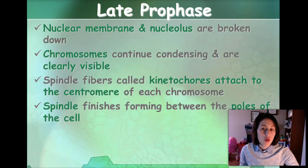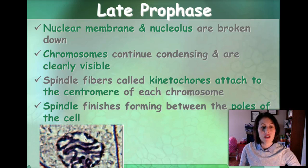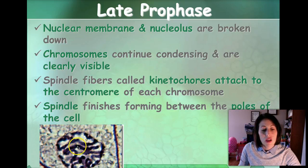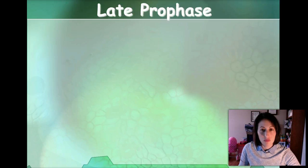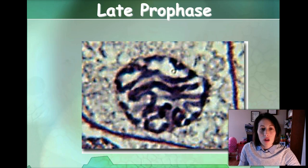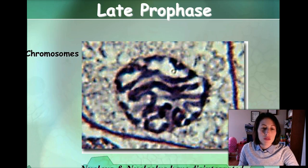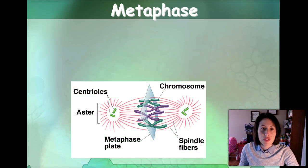The spindle finishes forming between the poles or the sides of the cell. Here you can see the nucleus is starting to disappear, and the chromosomes are very condensed at this point. And in very late prophase, here's a bigger, closer-up picture showing your chromosomes.